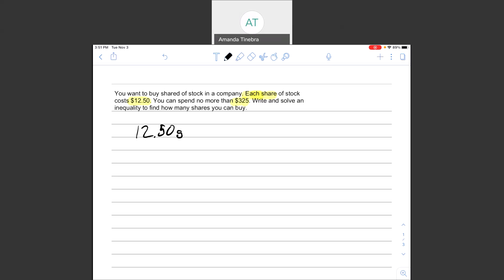And I know that I want that to be no more than $325. So $325 is going to be on the other side. Now I have to figure out what symbols should go in between. So I'm going to think about the relationship.